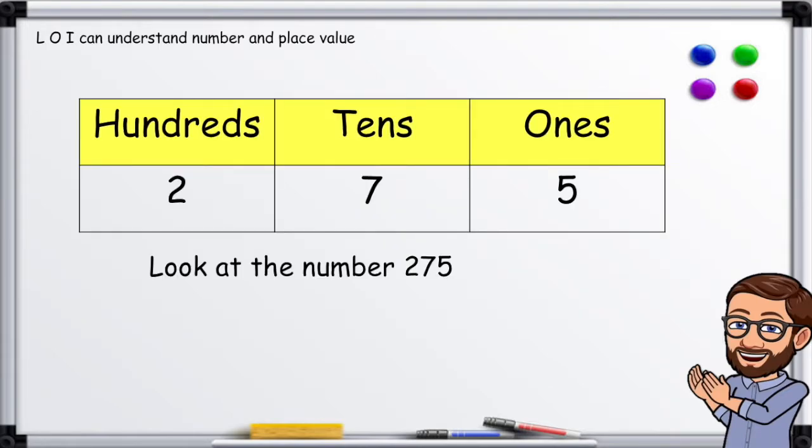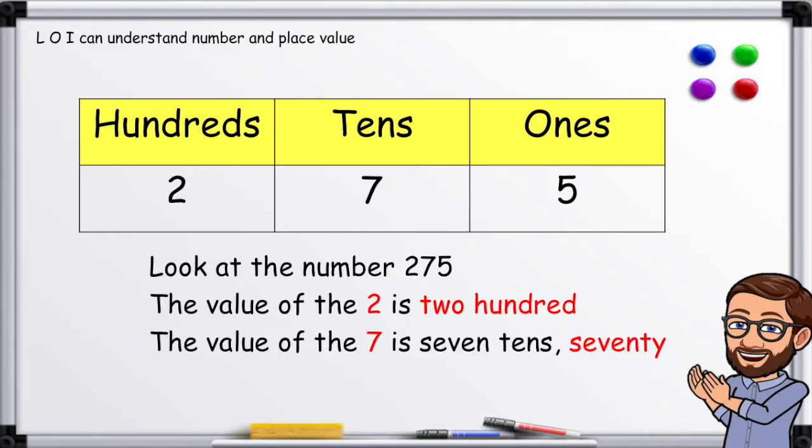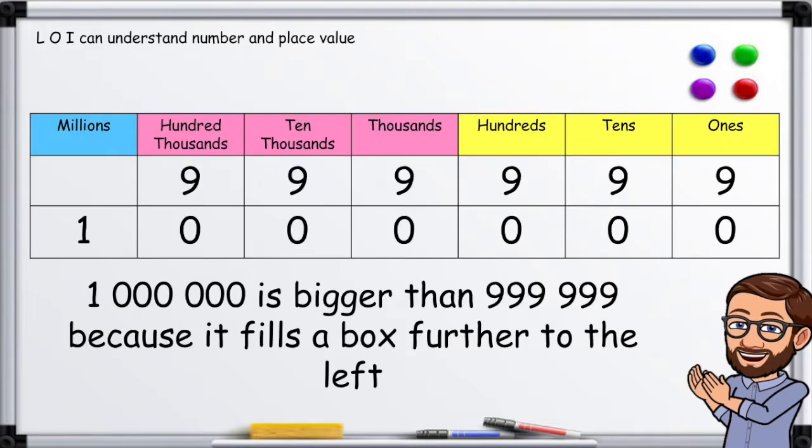Look at the number 275. The value of the 2 is 200. The value of the 7 is seven tens, 70. One million is bigger than 999,999 because it fills a box further to the left.